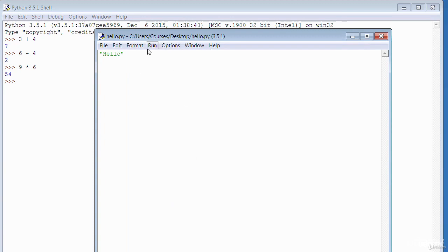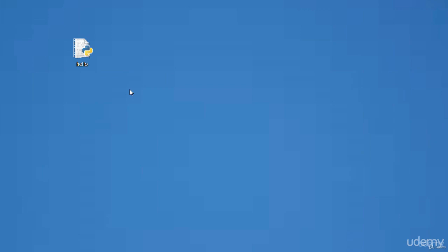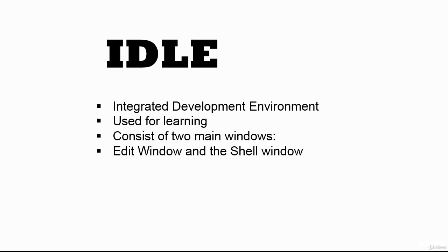You can also run the Python shell from within the edit window by going to Run and then Python Shell. In this lecture, we had a look at the Python IDLE, which is an integrated development environment for learning. It consists of two main windows: the edit window for writing proper Python code, and the interactive shell window for experimenting with small chunks of code.